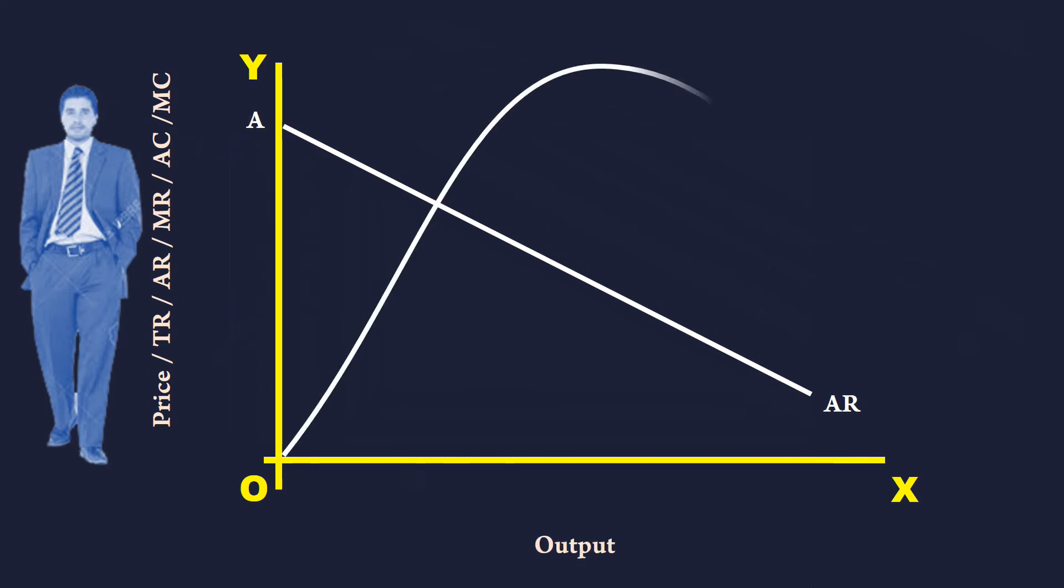TR is the total revenue curve. It rises first. After reaching the maximum, it falls. This is because the monopolist has to reduce the price to sell more.